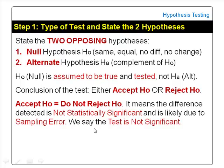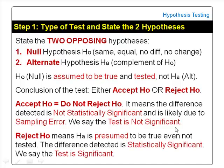Accepting the null hypothesis means the difference detected is not statistically significant — the difference is likely due to sampling error, and we say our test is not significant. When we reject the null hypothesis, we presume the alternate hypothesis is true, even though it is not tested. In this case, the difference detected is statistically significant, not likely due to sampling error, and we say the test is significant.